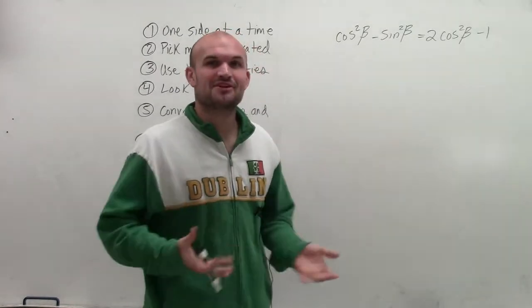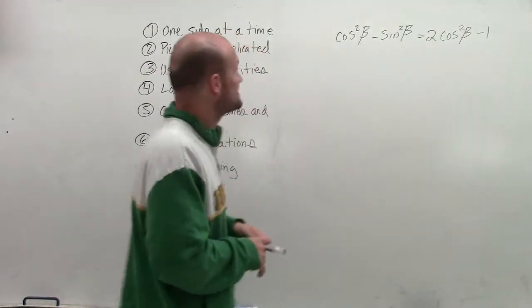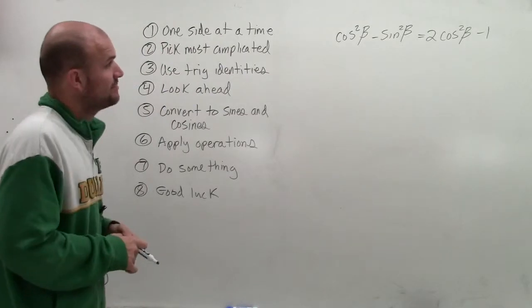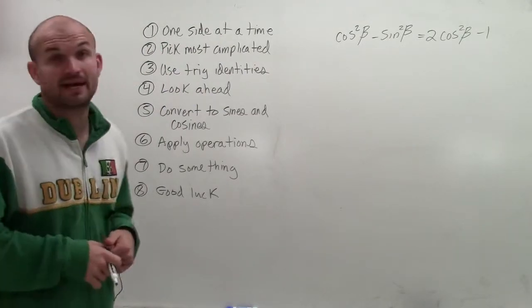OK, welcome. So now we're getting into verifying identities. What I have is cosine squared of beta minus sine squared of beta equals 2 cosine squared of beta minus 1.